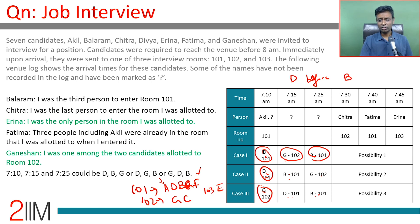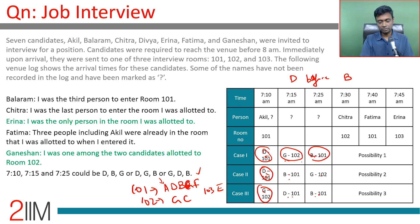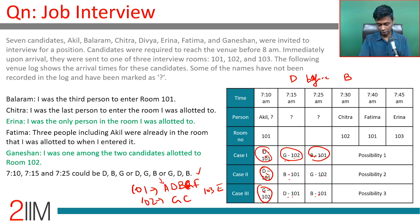The timings 7:10, 7:15, and 7:25 still have some ambiguity — we know Balram didn't come at 7:10, but there are still three possible arrangements for those slots. We can't narrow it down further without more constraints, so let's go to the questions and see which possibilities apply.